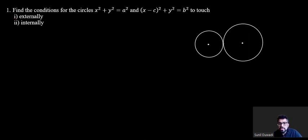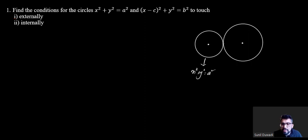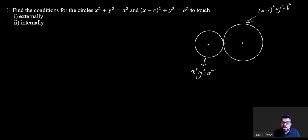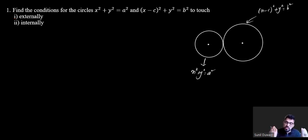The first circle's equation is x squared plus y squared is equal to a squared. The second circle's equation is x minus c, the whole squared, plus y squared is equal to b squared. It doesn't matter which circle is smaller or larger — they can even be equal in size.